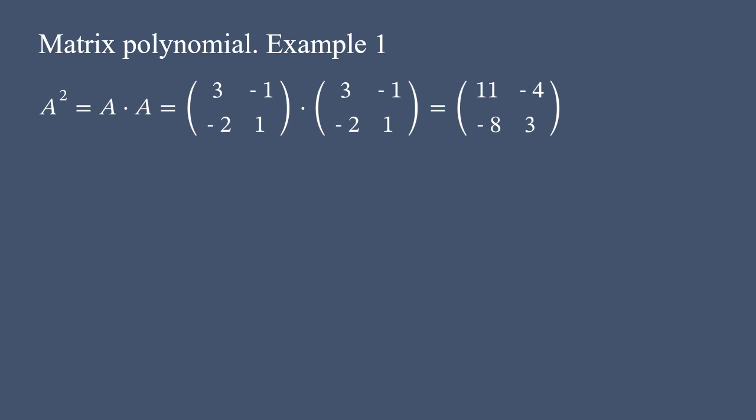Let's start with A squared. This means multiply A times A, using usual matrix multiplication. In other words, we multiply A by itself. The product results in 11, negative 4, negative 8, and 3.